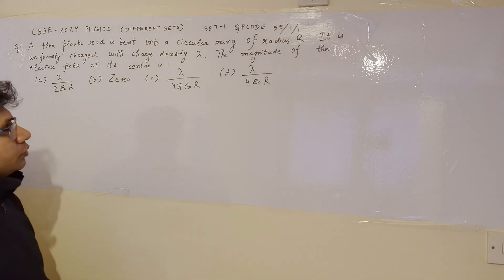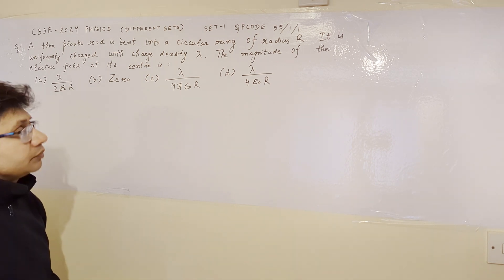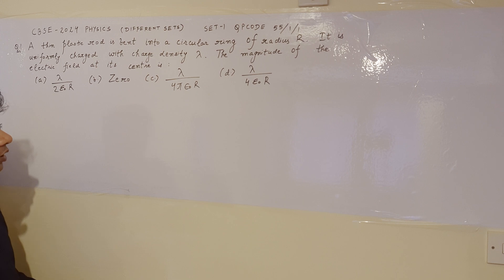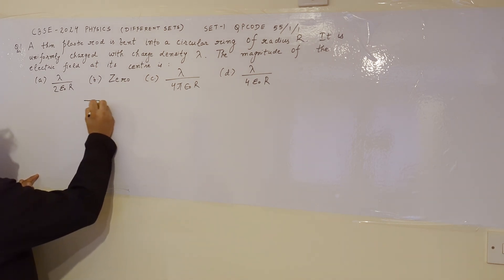So the problem is based on the concept of charge density and the concept of how to calculate the electric field. Now in this particular problem it is given that there is a thin rod.